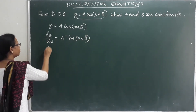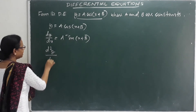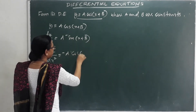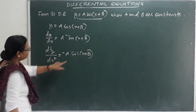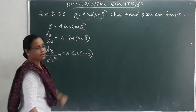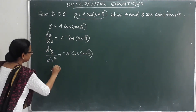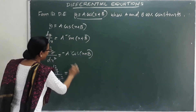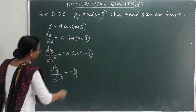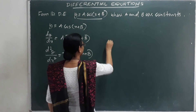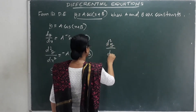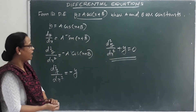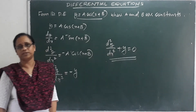Differentiating again: d²y/dx² = −a·cosx. But a·cosx + b = y, so a·cosx = y − b. Notice that d²y/dx² = −(a·cosx) = −y. Therefore d²y/dx² + y = 0. This is the required differential equation with no arbitrary constants.